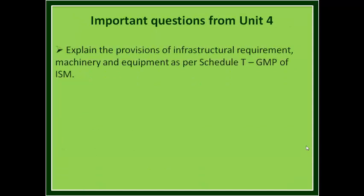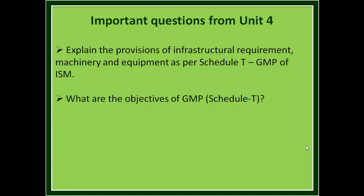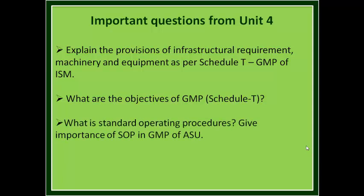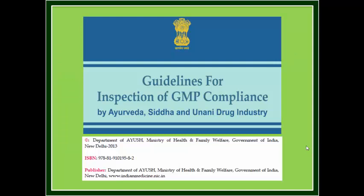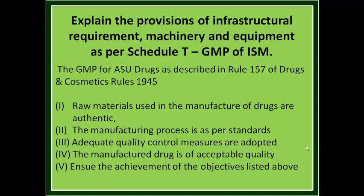These are the few important questions from Unit 4. First, explain the provisions of infrastructure requirement, machinery and equipment as per Schedule T. Second, what are the objectives of GMP that is Schedule T? Third, what is Standard Operating Procedure — give the importance of SOP in GMP of ASU. The entire topic is related to the guidelines for inspection of GMP compliance by the Ayurveda, Siddha, Unani drug industry, formulated by the Department of Ayush, Ministry of Health and Family Welfare, Government of India, New Delhi, in 2013.